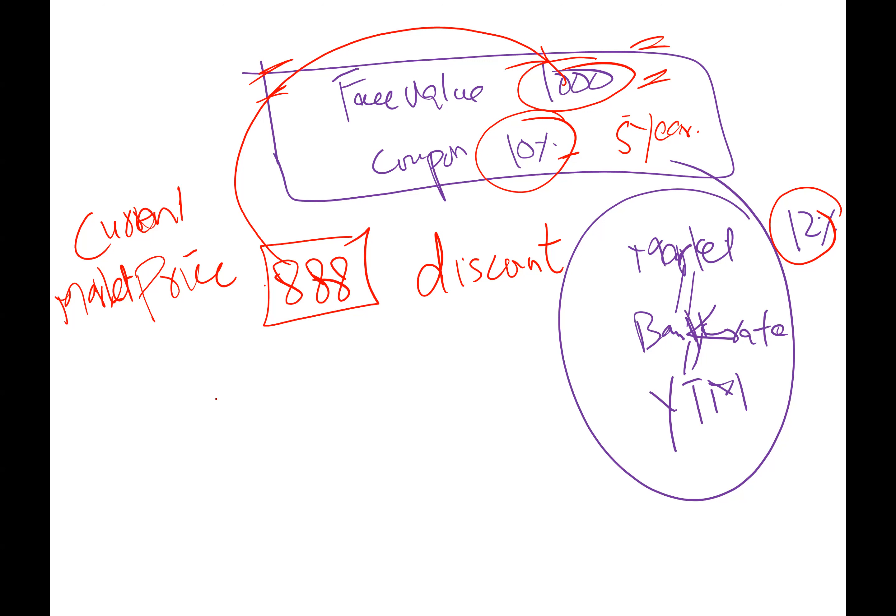Which means discount means company has given how much? $122 discount. And when we issue discounts, discounts have debit balance.